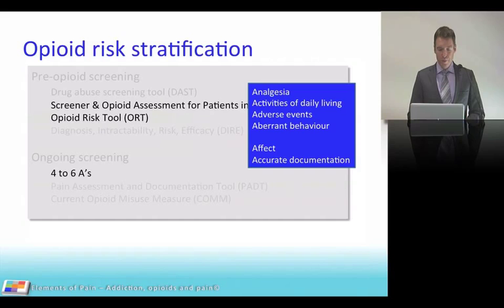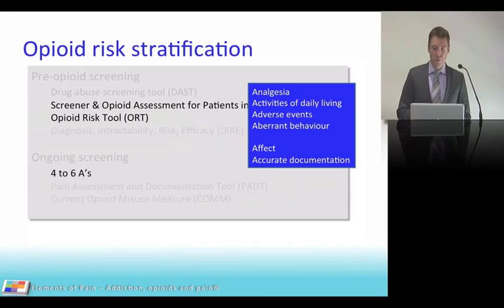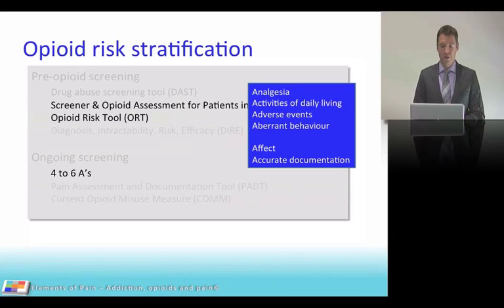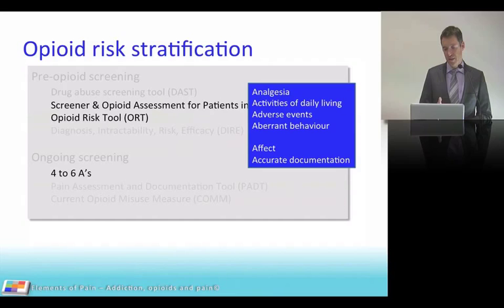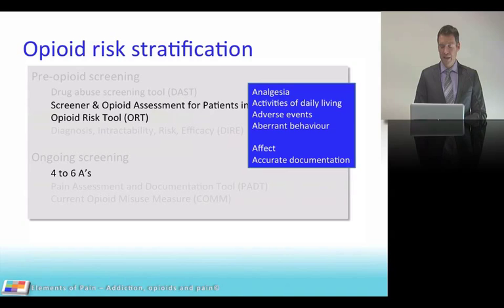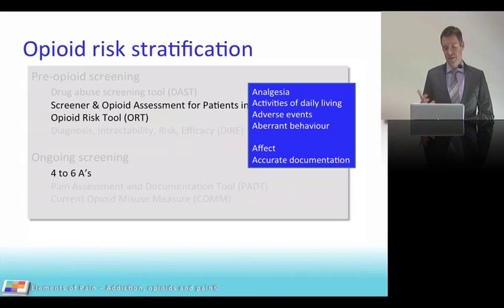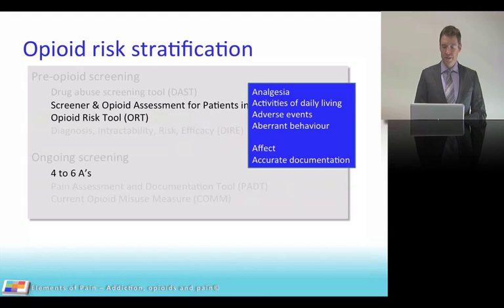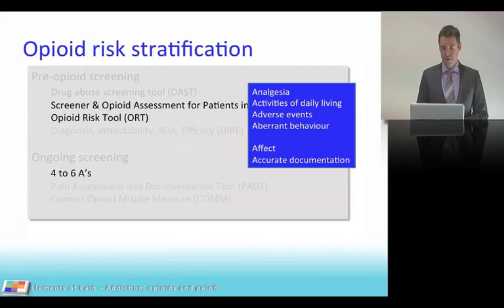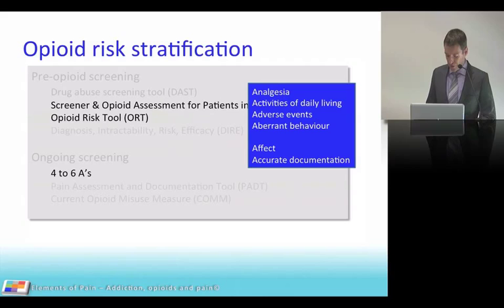For ongoing screening of patients already on opioids, use the four A's as defined by PASIC, extended to six A's: Analgesia (how is pain?), Activities of daily living (function), Adverse events (side effects), Aberrant behaviors, Affect (mood), and accurate documentation of each encounter.